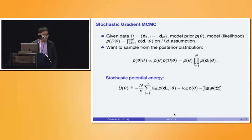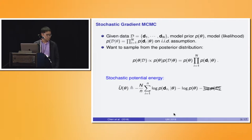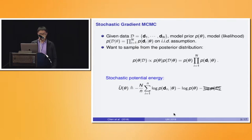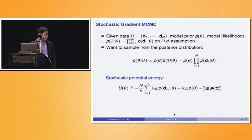Let me first give some background about Bayesian sampling and Stochastic Gradient MCMC. We have data D consisting of N data points and a model with parameter theta. We also have the likelihood P(D|theta), which can be decomposed as a product of the N individual likelihoods.